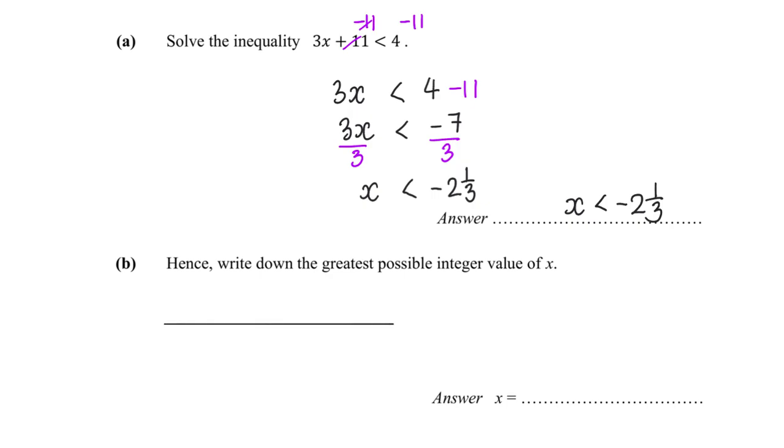When we have negative 2 and 1/3, it is actually between negative 2 and negative 3. So negative 2 and 1/3 is somewhere here on the number line.